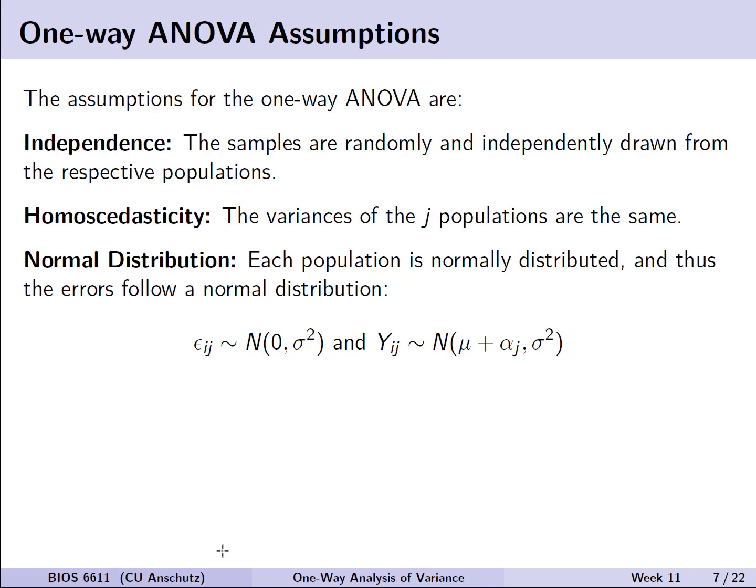Like regression, we have a few assumptions to make for the one-way ANOVA: independence, homoscedasticity, and normality. Independence assumes that the samples are randomly and independently drawn from their respective populations. Homoscedasticity is the assumption that the variances of each population are the same. Normality assumes that each population is normally distributed, or equivalently that the errors follow a normal distribution — epsilon_ij is approximately normal with variance sigma squared — corresponding to y_ij being normally distributed with mean mu plus alpha_j and variance sigma squared.